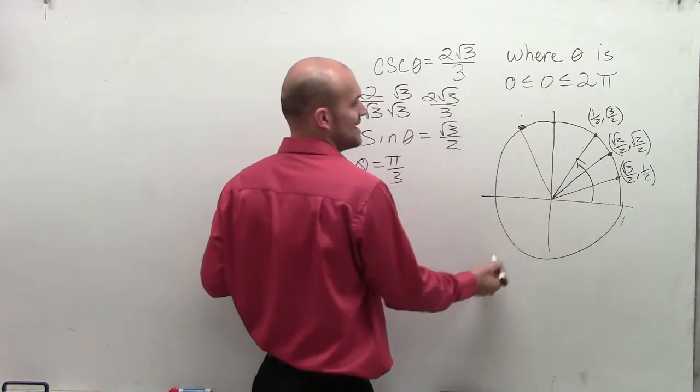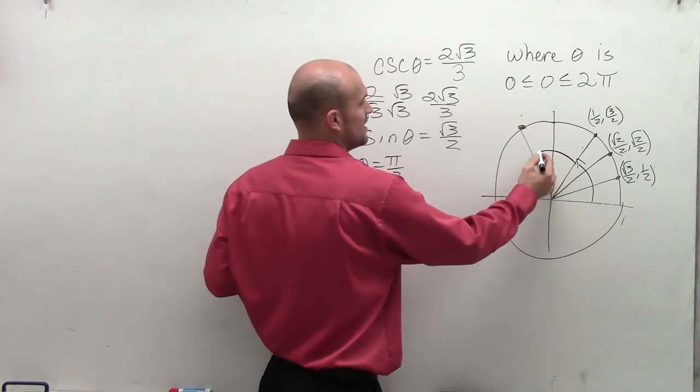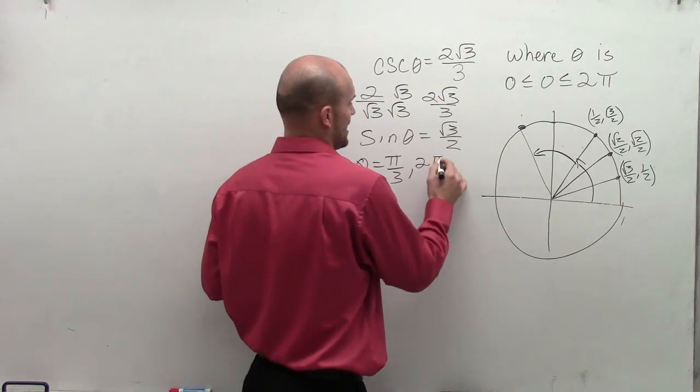So therefore, I just need to determine what is this angle. Well, if this is pi thirds, the next angle over is going to be 2 pi over 3.